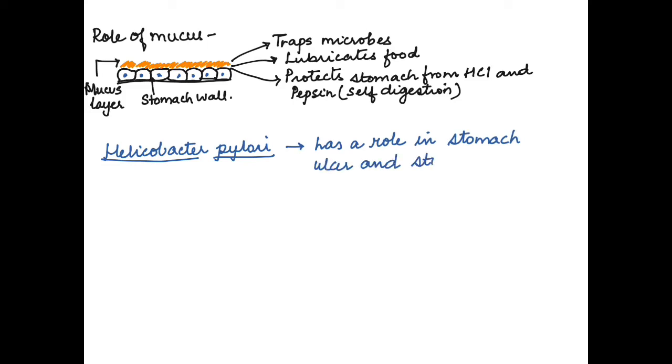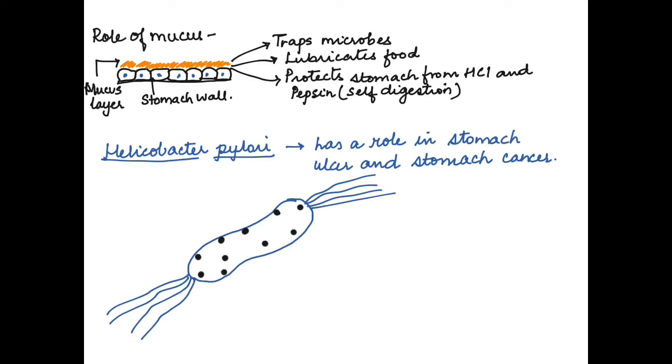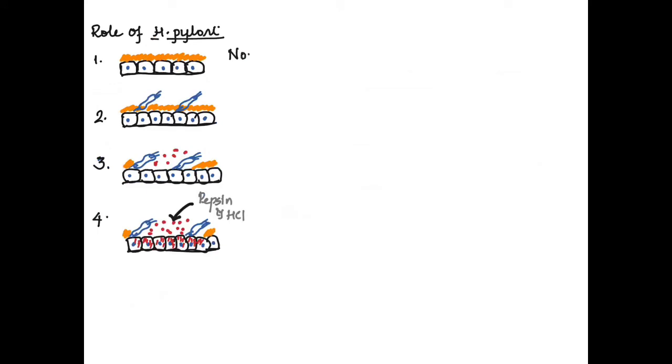Now the Helicobacter pylori which can cause stomach ulcer also has a particular role to play here. The structure of Helicobacter pylori is that it shows tufts of flagella and on its surface it shows certain proteins. These are the lipoproteins that are present on the external wall of these bacteria, and these lipoproteins help in attaching to the host cell. So in this case it helps in attaching them to the wall of the stomach, and this Helicobacter pylori is supposed to be releasing an enzyme called urease.